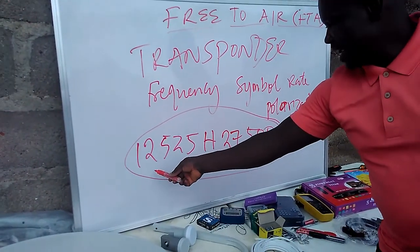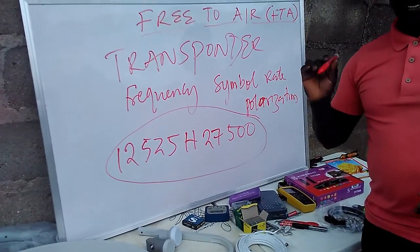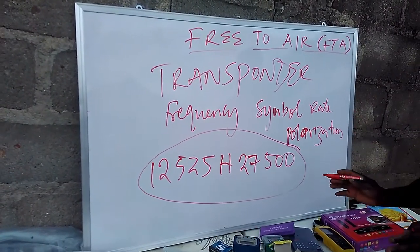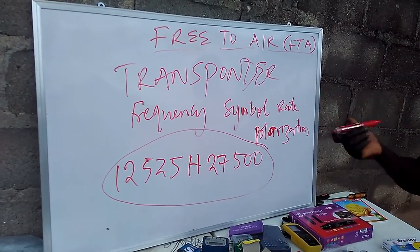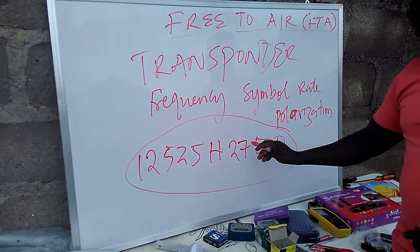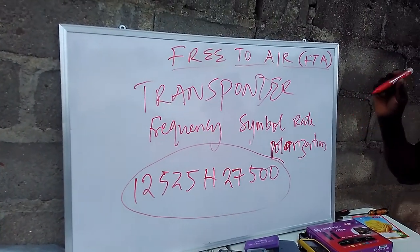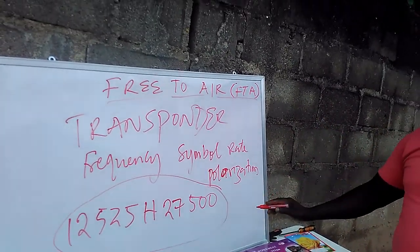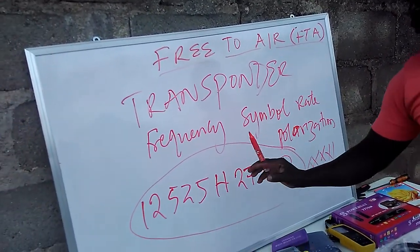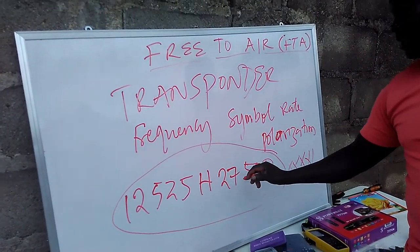That's why I listed this — we are going to make use of all this information in our practical aspect of the installation. Because they are both interwoven, you can't go and track a signal without the knowledge of the frequency, symbol rate, and polarization of that particular satellite. Each of the channels have their frequency, their polarization, and their symbol rate.